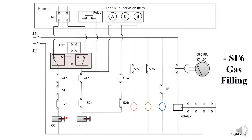Same with the tripping circuit. In the tripping circuit, the GLX contact uses 52A and 52B. There are two contacts in the auxiliary switch — they are in the supervision of the circuit. Then there is a tripping coil, and the breaker auxiliary switch turns on and off.